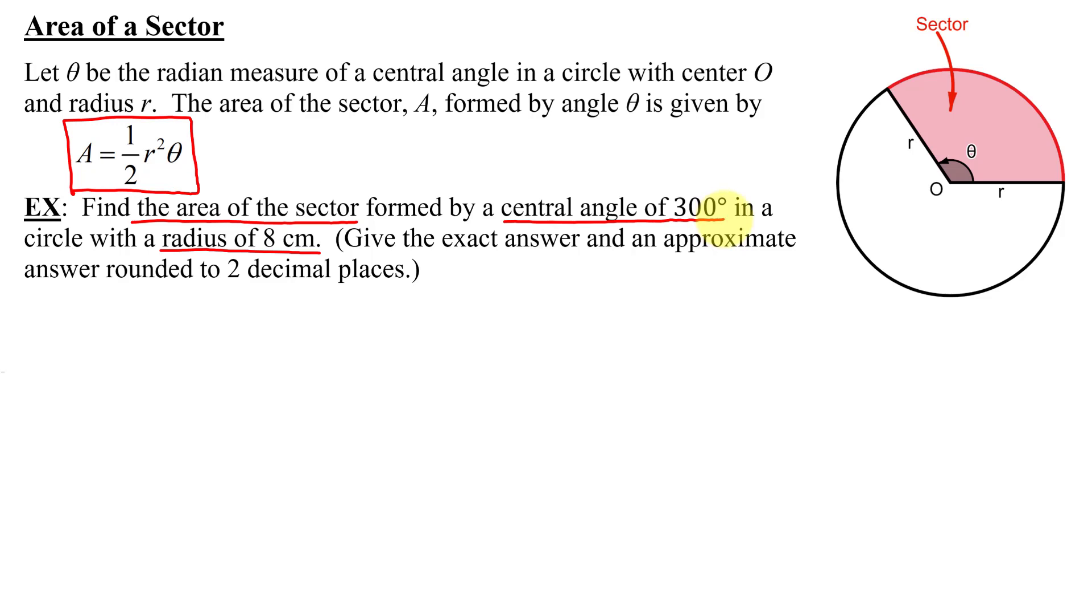And unfortunately, what a lot of students do is they plug these two numbers immediately into the formula, but that's incorrect because theta must be the radian measure of the central angle. So before I do anything else, I'm going to have to take my central angle of 300 degrees and convert it into radians.